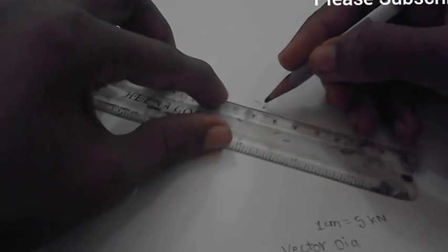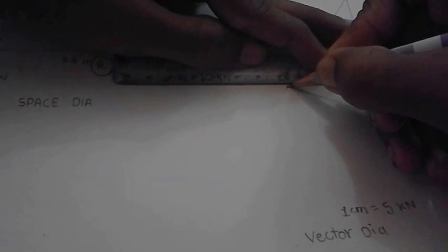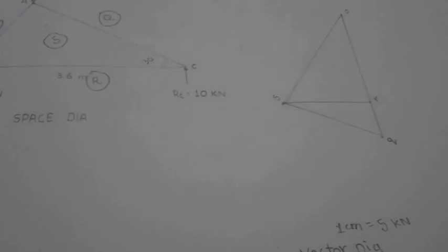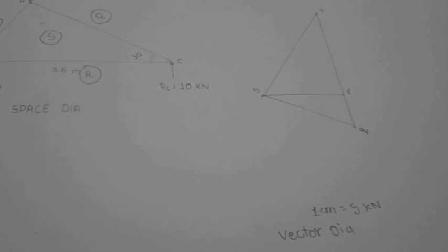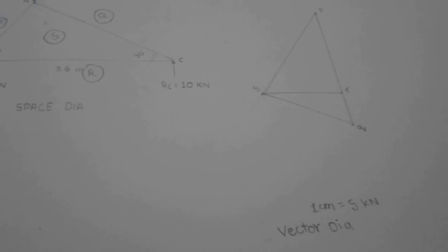Now we have to show the forces as compressive and tensile. Remember, if an arrow pushes the joint, the member force is compressive. If an arrow pulls the joint, the member force is tensile.